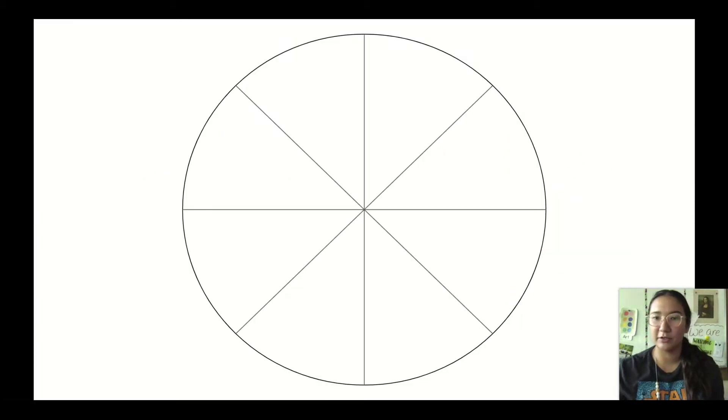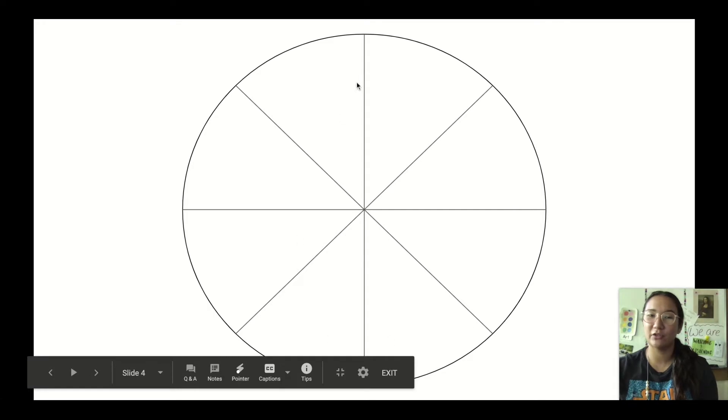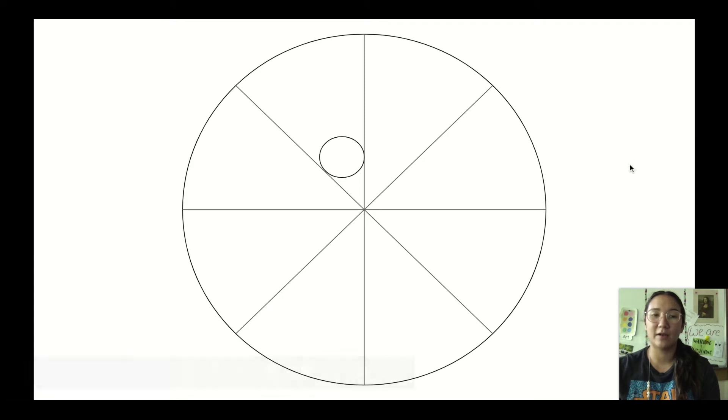When you're making a radially symmetrical design, the easiest way to do it is to start with a kind of pizza or pie shape. Basically, just a circle divided into even sections. So if you put a design in one of those sections, to keep it radially symmetrical, you have to put the same shape in the same spot in every section. This creates radial symmetry.